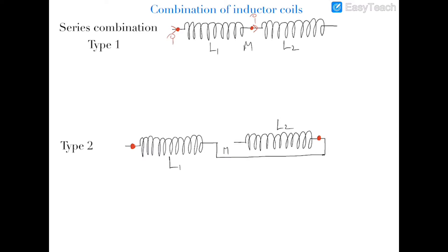This signifies that the total EMF induced would be the sum of: EMF induced in the first coil due to self induction, plus EMF induced in the second coil due to self induction, plus EMF induced in the first coil due to the second (mutual induction), plus EMF induced in the second coil due to the first (mutual induction).